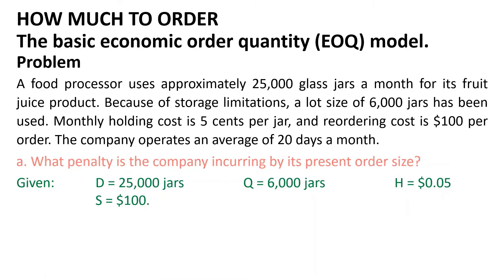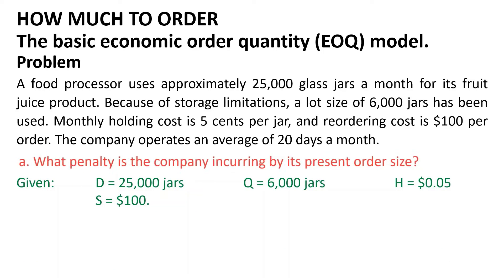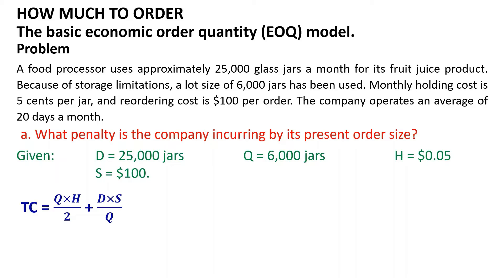To know the penalty the company is incurring by its present order size, we have to calculate the total cost corresponding to the current order quantity Q and compare it with the total cost corresponding to the economic order quantity Q0. We know that TC equals Q multiplied by H divided by 2, plus D multiplied by S divided by Q.